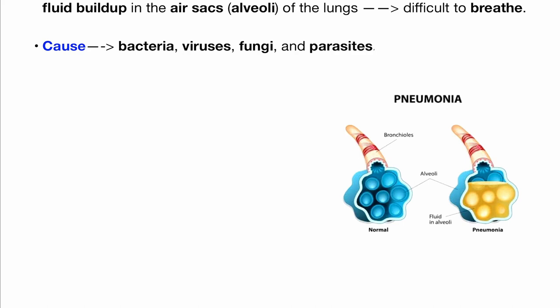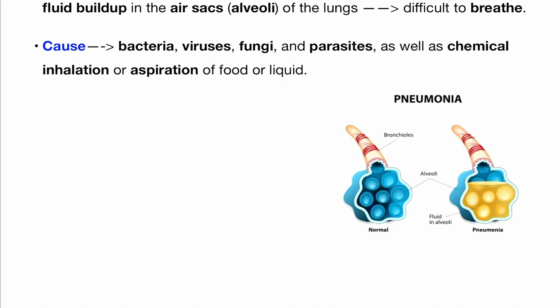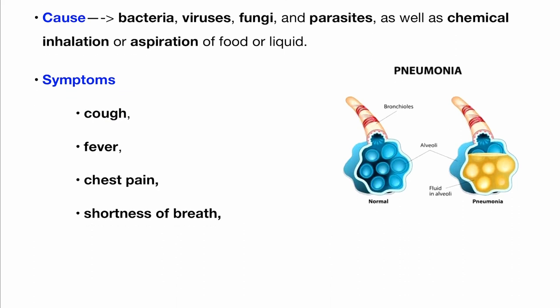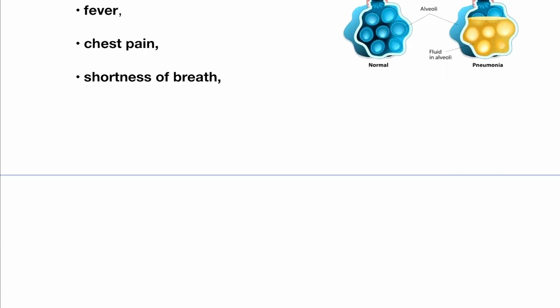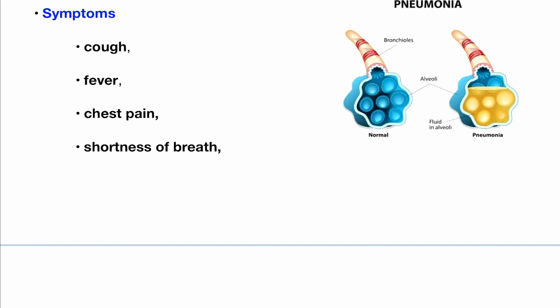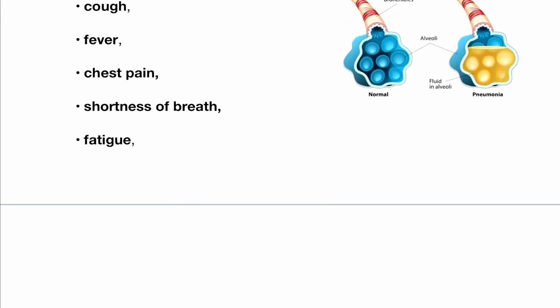Anything can cause pneumonia — bacteria, viruses, fungi, parasites, chemicals, or even aspiration of food. For OMFS students: GA patients can develop aspiration pneumonia. Symptoms include cough, fever, chest pain, and shortness of breath. For NEET MDS, don't memorize these — just develop photographic memory, as the answer is in front of you in the options.